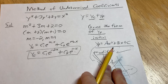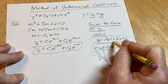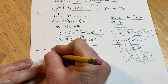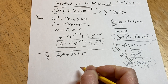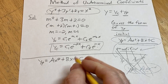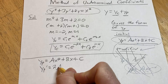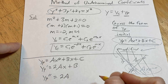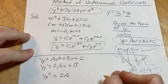Now we find y sub p by plugging its form into the original DE. We have y sub p equals ax squared plus bx plus c, so we differentiate: y sub p prime equals 2ax plus b, and y sub p double prime equals 2a. We go up to the second derivative since this is a second-order equation.